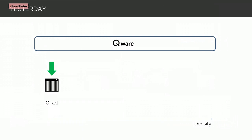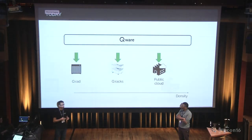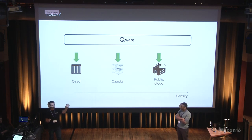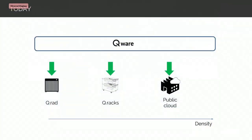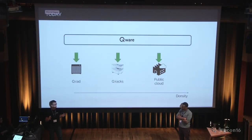We are not doing only heaters. Yesterday and today we are presenting the QRAD, the first digital heater. We are also doing other kinds of computation, because the main goal of our platform is to be agnostic. We are able to deploy computation on what we call QRAD — it's like a little shelf with a lot of motherboards. It's the cheapest way to have a lot of computation in a small room.